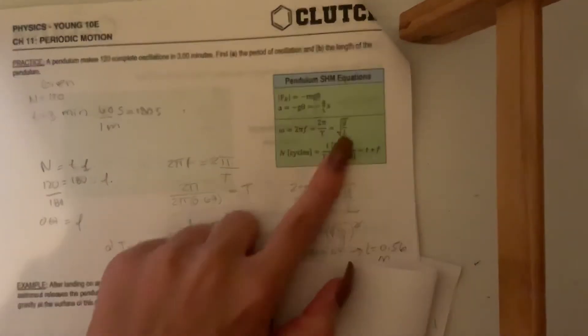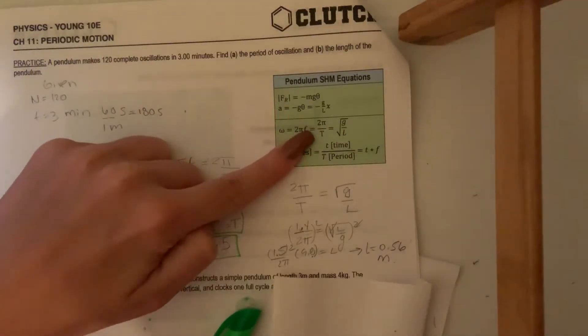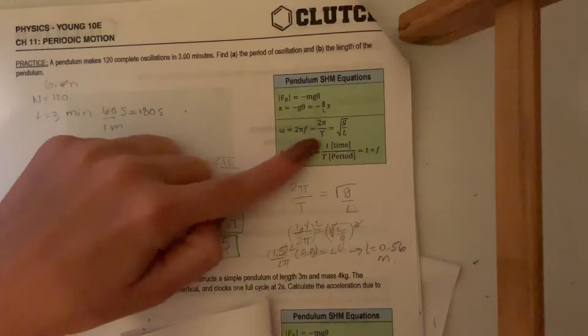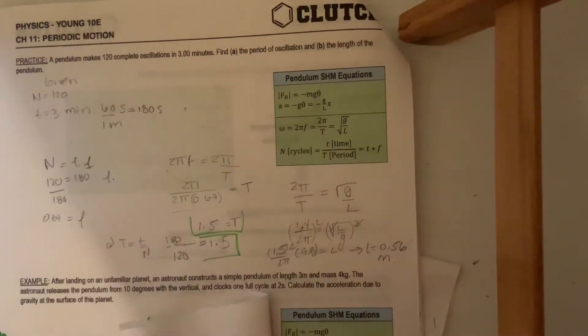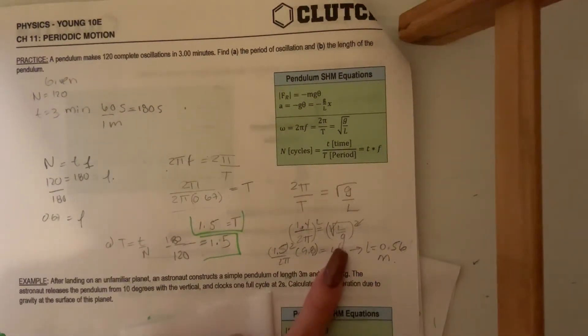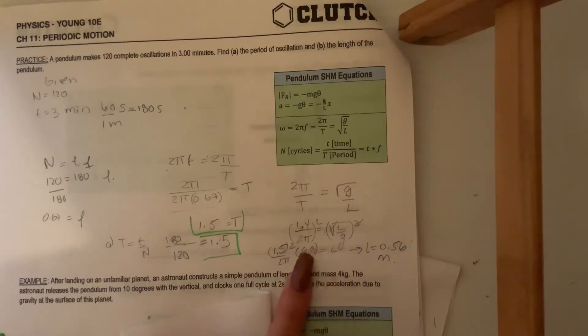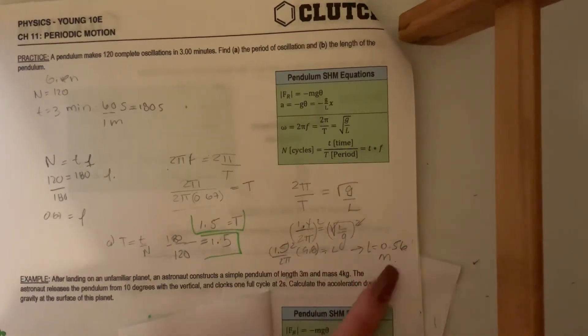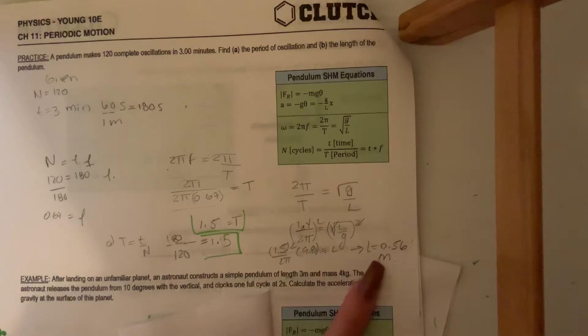First we flip the equation, then I square, then I multiply to the second power, and I got this. This is my final answer. This is 0.56 meters.